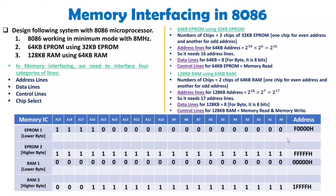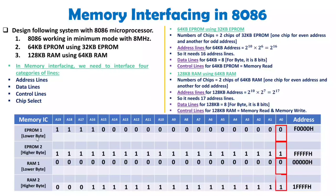Now, an important detail: EPROM1 has even addresses where A0 equals 0. EPROM2 has odd addresses where A0 is always 1. For lower byte memory, A0 is 0; for higher byte memory, A0 is 1. Even address means A0 equals 0; odd address means A0 equals 1. You will substitute 0 for lower byte and 1 for higher byte when defining A0 for each chip.